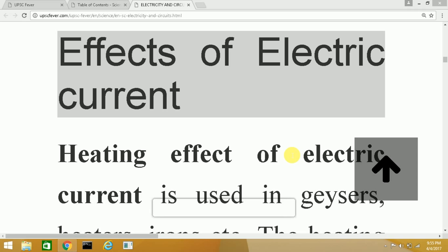Bulbs have a filament of tungsten and are filled with inert gases like nitrogen or argon. Inert means chemically not reactive.